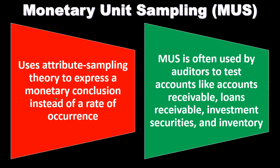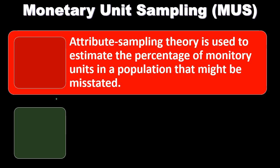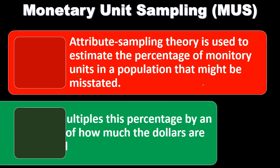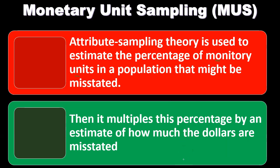These are accounts where we would want to use monetary unit sampling because we want a conclusion that has that monetary, dollar-amount type of result. Attribute sampling theory is used to estimate the percentage of monetary units in a population that might be misstated, and then it multiplies this percent by an estimate of how much the dollars are misstated.